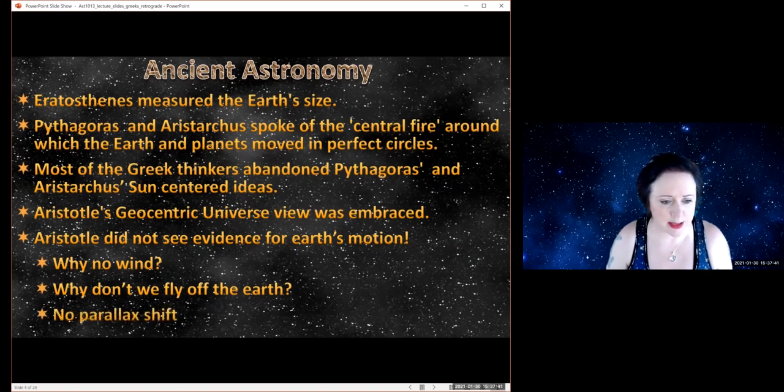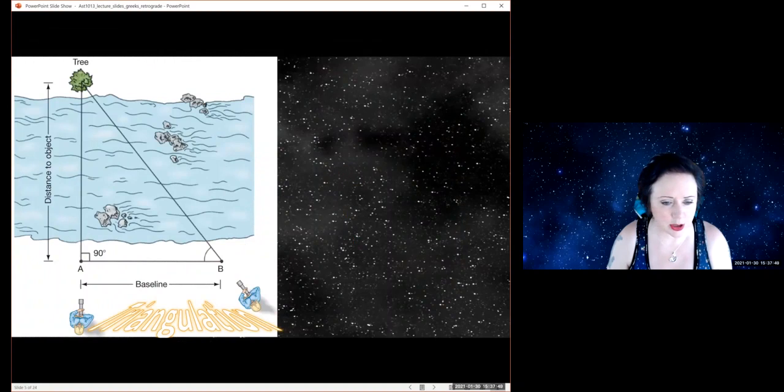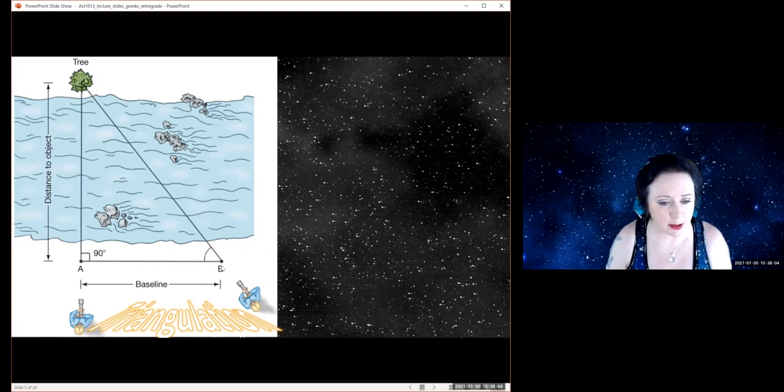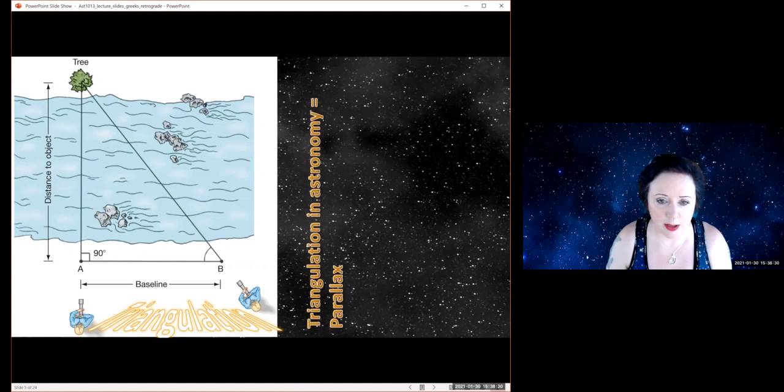Parallax is basically a way of using triangulation to measure distances. Here you can see I've got a tree on the opposite side of a river. I can look at what direction, directly across the river, and I can walk somewhere along the bank and look at it from another direction. Then I know the angle that I have to look through to see it. Instead of looking straight across the river, I have to look at some angle. I can measure how far I walked along, and by using trigonometry, I know this angle and I know this baseline. Now I can calculate what this side is. That's the basic idea of triangulation. In astronomy, we call that parallax.